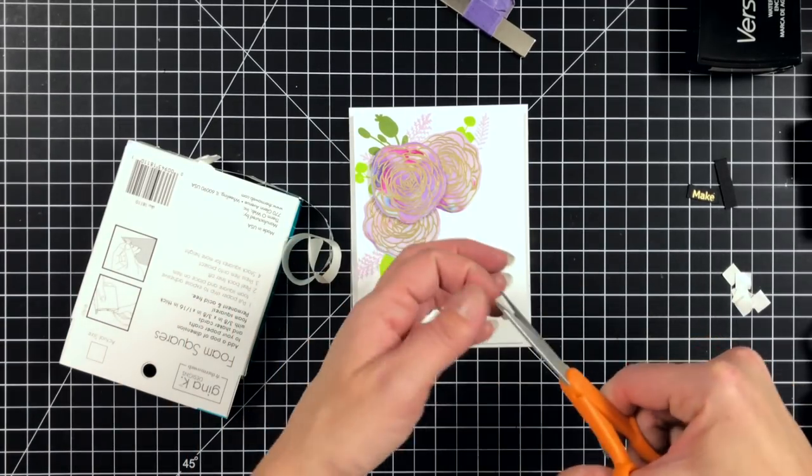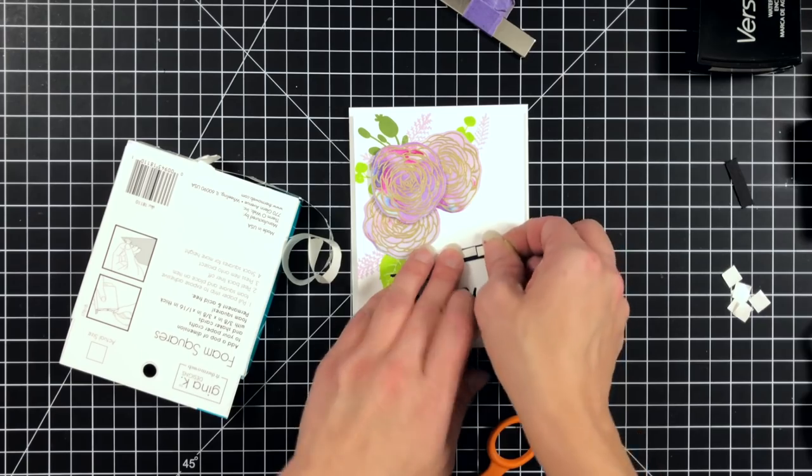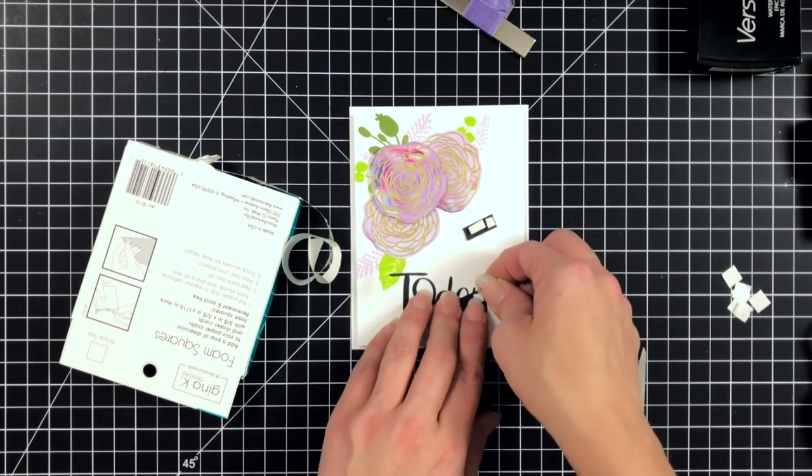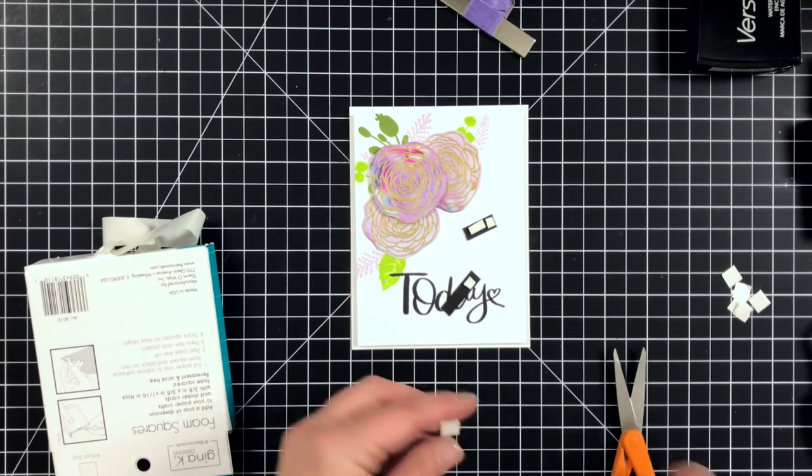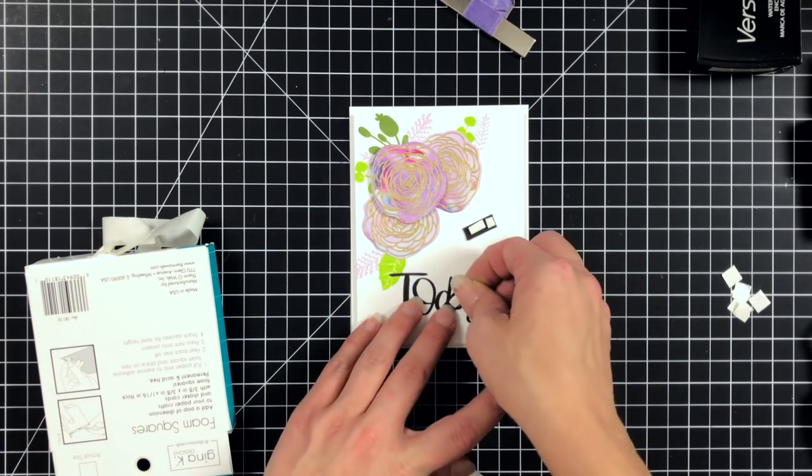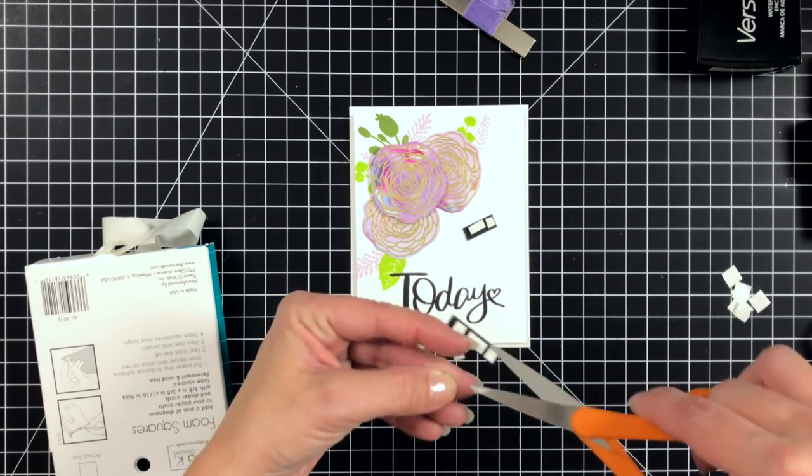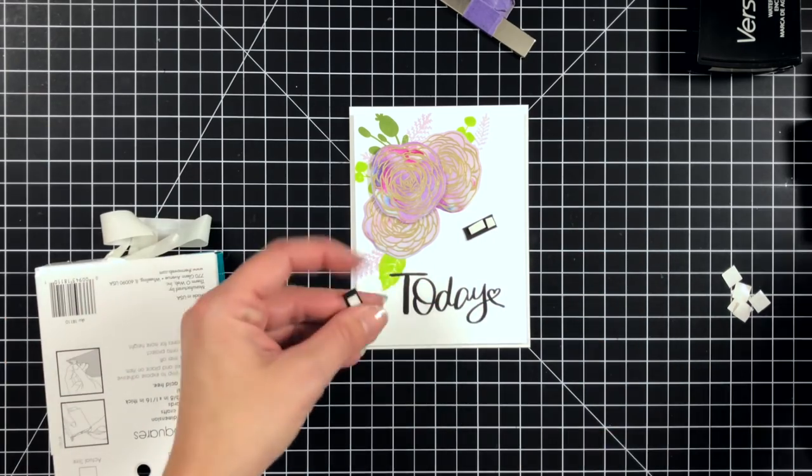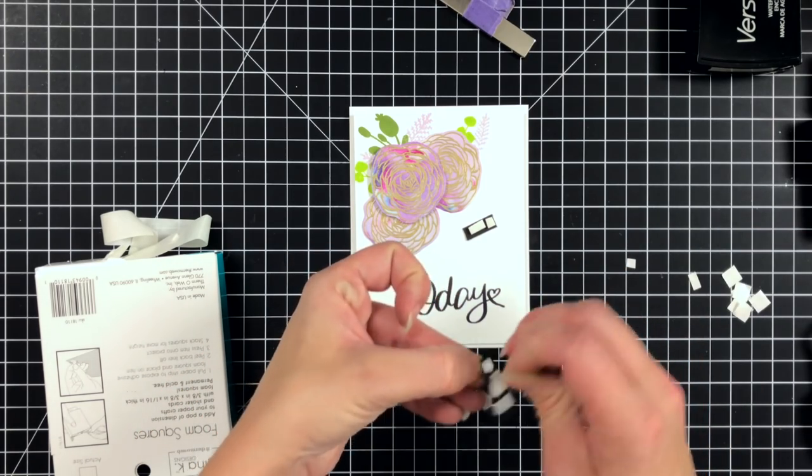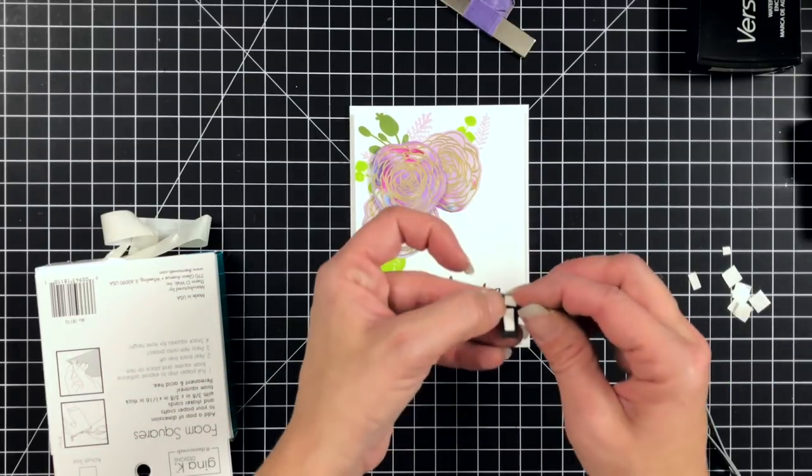Off camera I did go ahead and stamp and heat emboss my little sentiment. I stamped them in Versamark ink on black cardstock and then heat embossed with gold embossing powder. I just trimmed them down to very tiny strips that I'm going to put around my today sentiment on the card. You can see I'm just trimming down those foam squares. Gina has black foam squares that would be better behind my black cardstock, but I forgot to grab them so white still works perfectly.